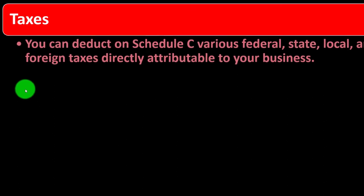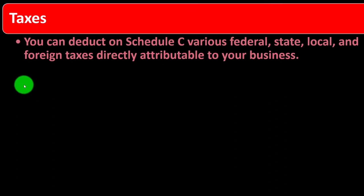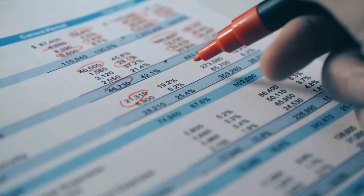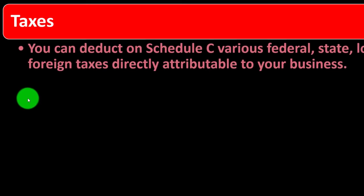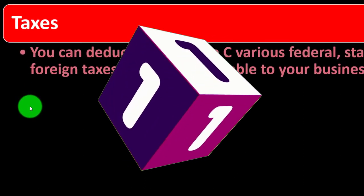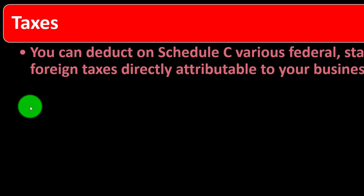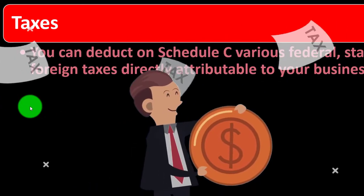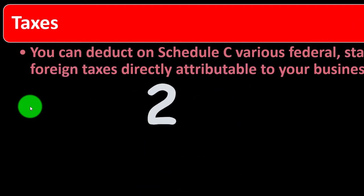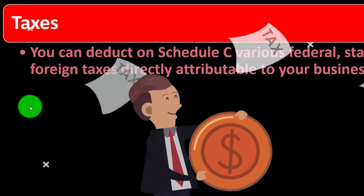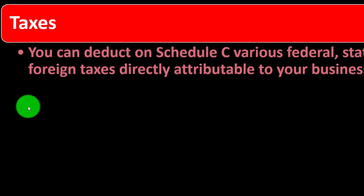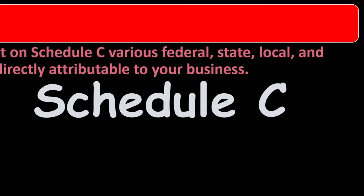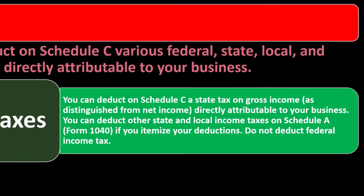On taxes: you can deduct on Schedule C various federal, state, local, and foreign taxes directly attributable to your business. Like any business deduction, they must be ordinary and necessary and linked to the business. Some confusion arises around whether a tax is deductible at all, and then whether it belongs entirely on Schedule C or needs to be allocated between Schedule C and some other place.